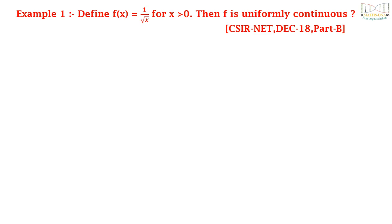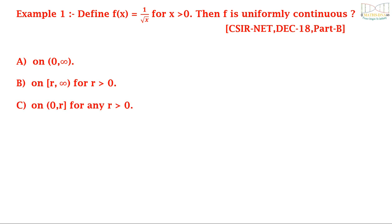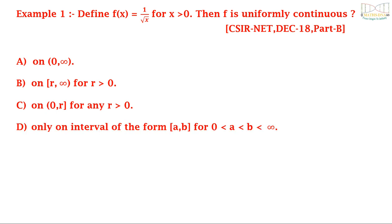Example 1: Define f(x) = 1/√x for x > 0. Then f is uniformly continuous on: option A, open (0, ∞); option B, closed [r, ∞) for r > 0; option C, open-closed (0, r] for r > 0; and option D, only on intervals of the form closed [a, b] for 0 < a < b < ∞. This question was asked in CSIR NET December 2018 Part B.